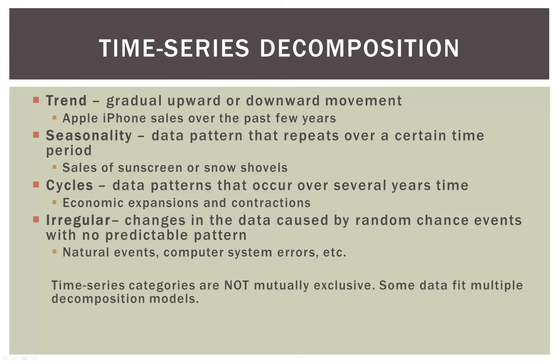Now time series categories are not mutually exclusive. Some data fit multiple decomposition models. So we could have a seasonal trend, or a cycle that is intermixed with irregular blips in it. So these categories are not mutually exclusive.